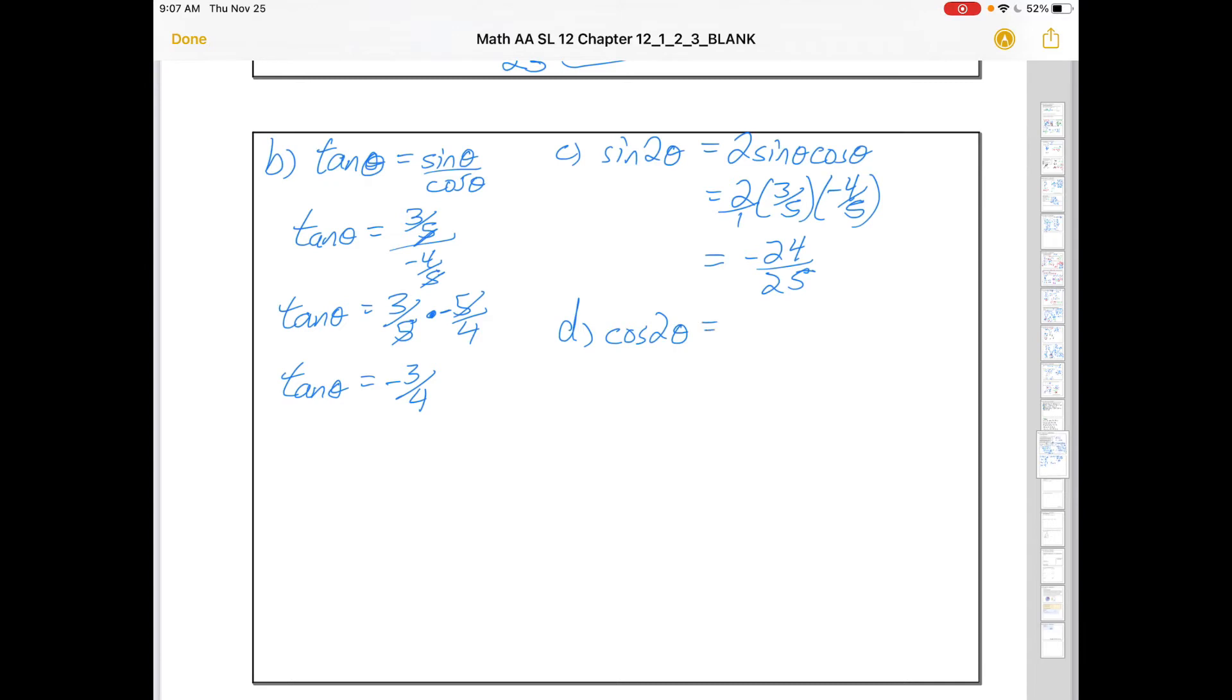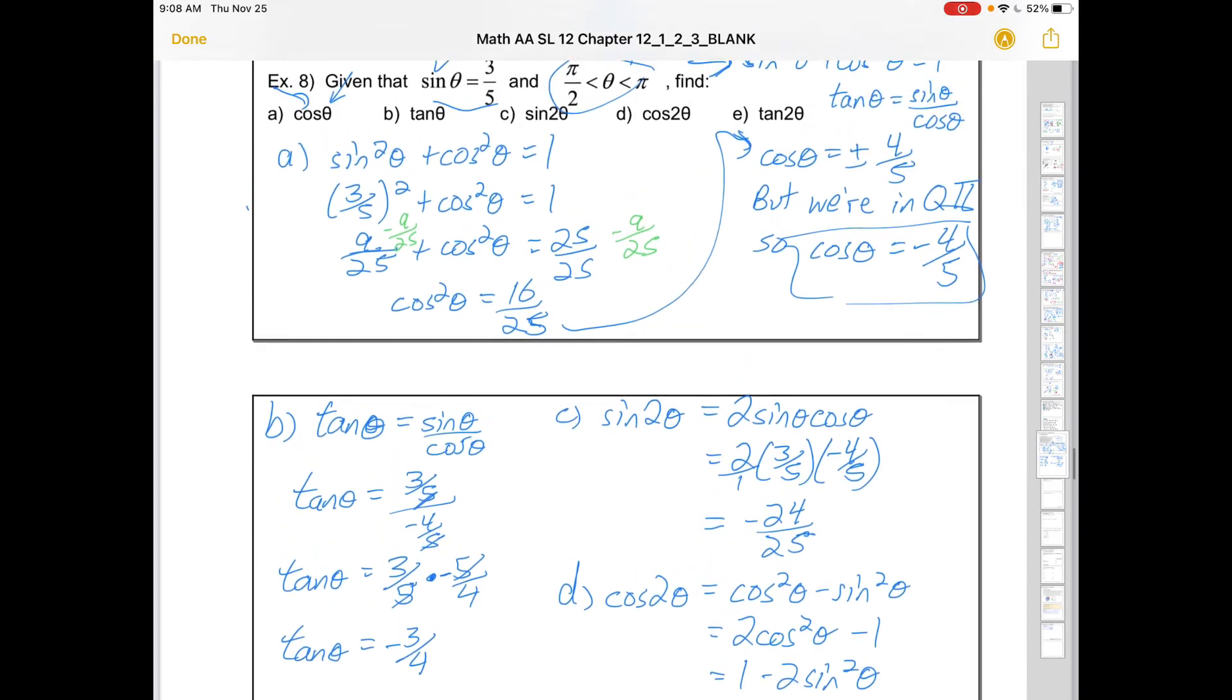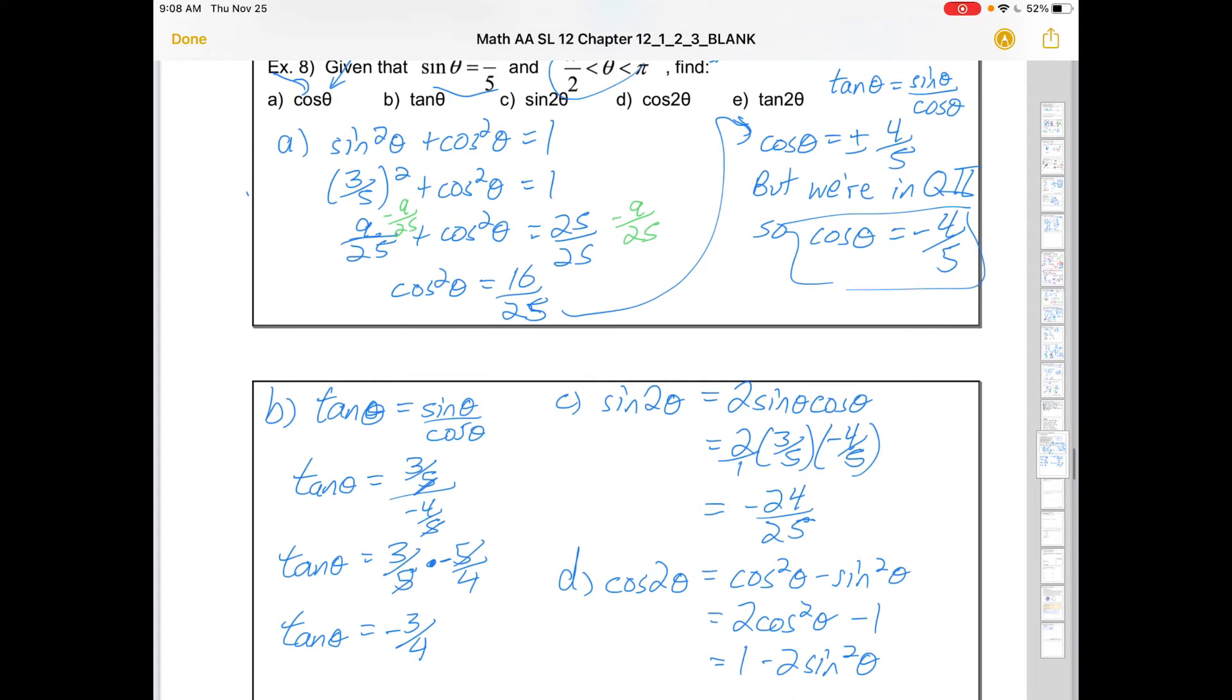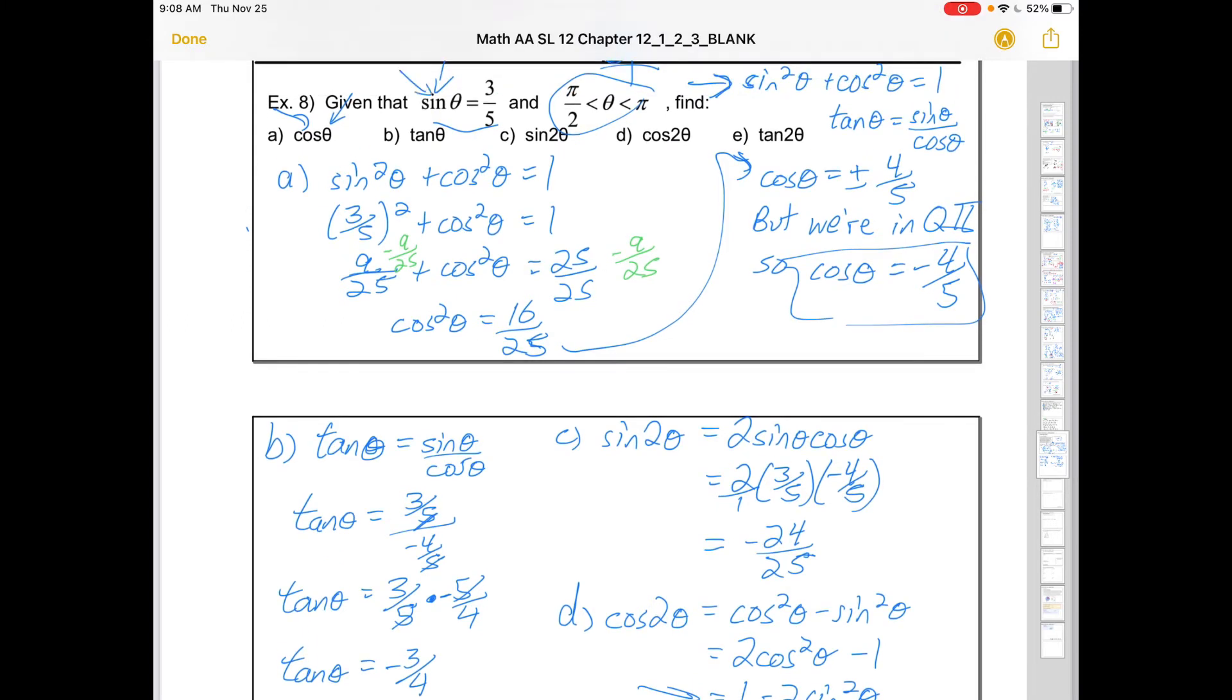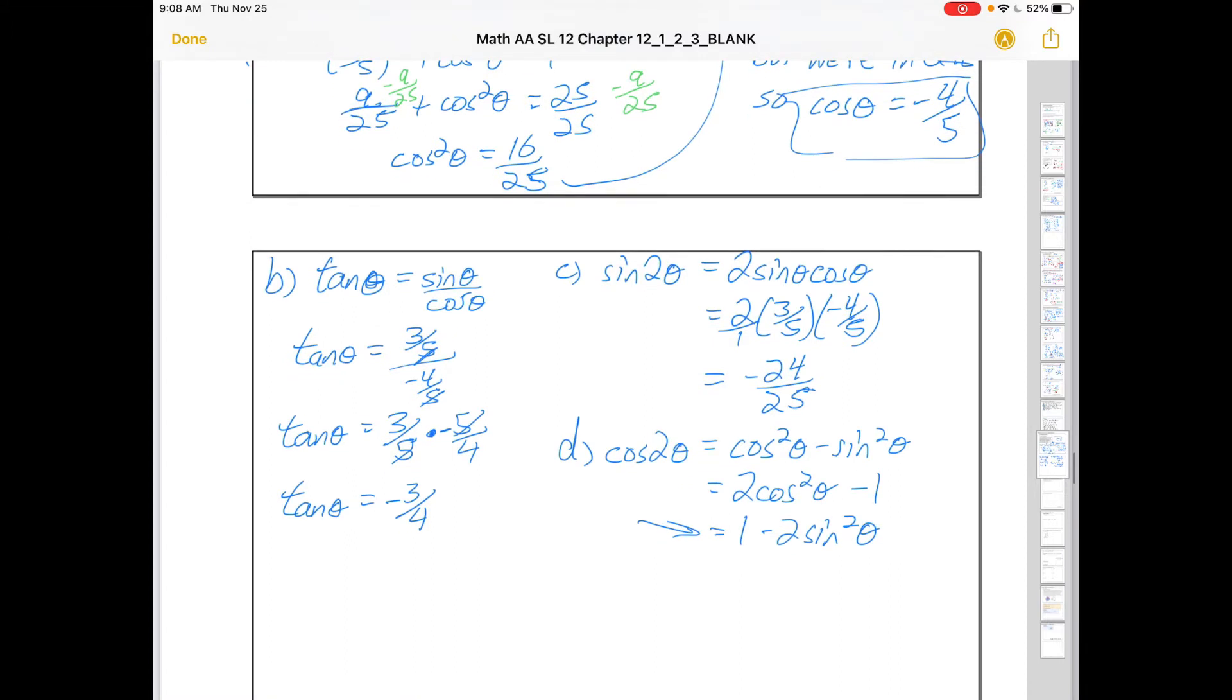The next one we're asked for cos 2θ. And you have three options. You have this identity, you have this identity, and you have this identity. So you get to take your pick. And they'll all give you the same answer. However, in this case, the best one to pick is this one. Because it only relies on information that was given to you. Not on information that you generated in earlier steps. So they should give you follow-through marks if you botch it and use some wrong data in say A or B. But it's best to just use what they gave you. So 1 - 2 times sine squared. So that's (3/5)².